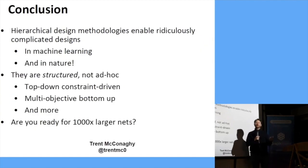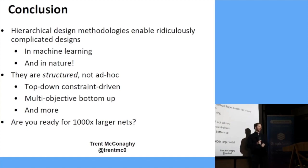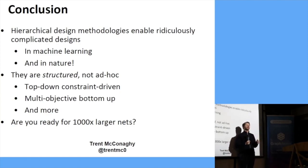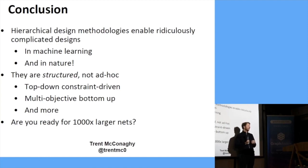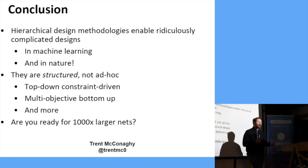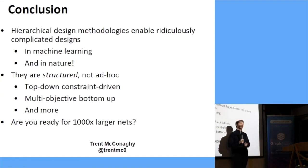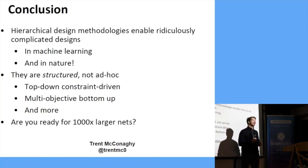To summarize: hierarchical design methodologies enable ridiculously complicated designs in machine learning, engineering, and nature. They are structured, not ad hoc. We've got top-down constraint-driven design: going from the top, adding constraints, ending up with a design. Or bottom-up: building blocks to bigger and bigger building blocks, with structure through multi-objective feasibility models. Are you ready for neural networks that are 1,000x bigger? A million times bigger? And if any of you want to go and evolve a car, come talk to me. Thank you.